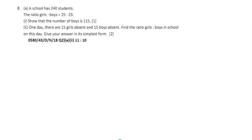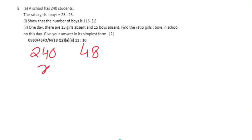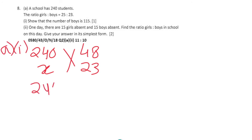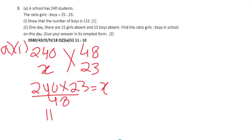Question 8, part a: A school has 240 students and the ratio of girls to boys is 25:23. Part 1: show that the number of boys is 115. 240 students represent a total ratio of 25 plus 23, which is 48. For boys: cross multiply 240 times 23 divided by 48, which gives us 115.